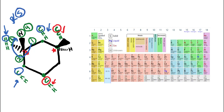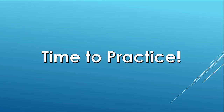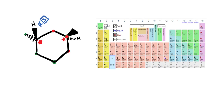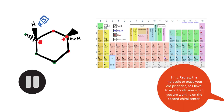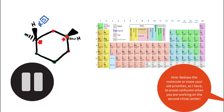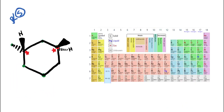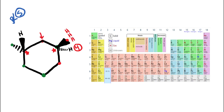Now let's determine the absolute configuration of the second chiral center. Hydrogen is again last priority. For the three carbons, we list their attached atoms excluding the chiral center: the methyl carbon has hydrogen, hydrogen, hydrogen; one ring carbon has carbon, hydrogen, hydrogen; and the other ring carbon also has carbon, hydrogen, hydrogen — making the methyl third priority again. We then need to break the tie between the other two groups.